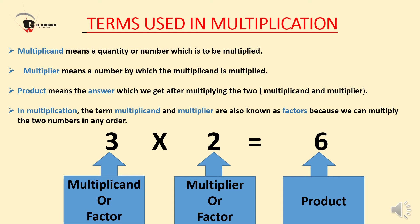Terms used in multiplication. Dear students, it is very important to understand and memorize these terms correctly. First is multiplicand — multiplicand means a quantity or number which is to be multiplied. Multiplier is our next term — multiplier means a number by which the multiplicand is multiplied. Third is product — product means the answer which we get after multiplying the two.